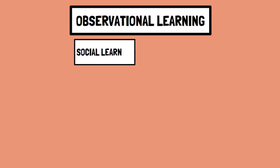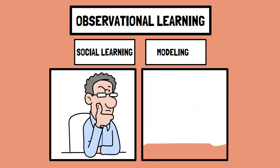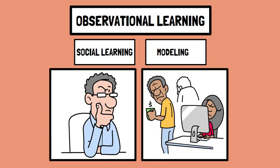Observational learning, also known as social learning or modeling, is a process where individuals acquire new behaviors and knowledge by observing and imitating others. This type of learning is not solely reliant on direct personal experiences but involves learning from the experiences of those around us.